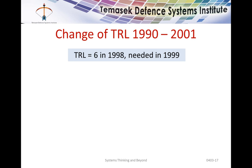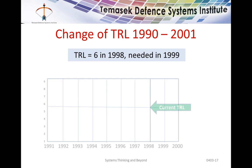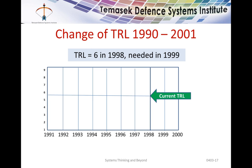Let's look at the change of technology from 1990 to 2001. The TRL is 6 and it's needed in 1999. If we plot these on a graph, the current TRL is level 6 in 1998 — can we use it in 1999? There is absolutely no information from a single data point about whether you can or can't. But if we look at the history of how the TRL changed: at 1991 it was at level 1, it stayed at level 1 until 1995 when it went to level 2, stayed at level 2 until 1997, and only in 1998 did it reach level 6.